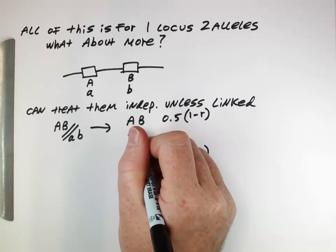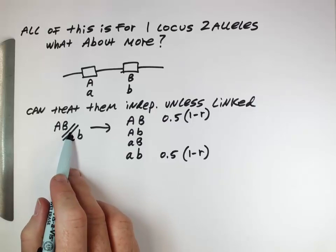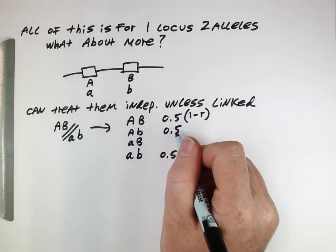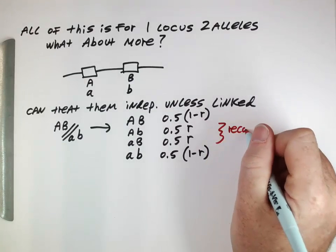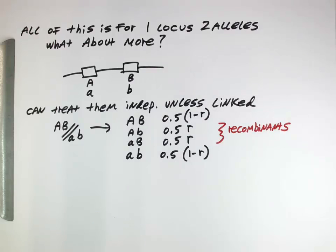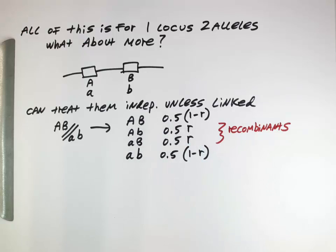Some of the gametes, if there's recombination, will have the recombined combinations. If there's a recombination event, capital A can be combined with lowercase b. These recombinants are equally likely but occur based on the recombination rate. If we have no linkage, we would expect this rate of recombination to be 0.5 — alleles that are very far from each other or on different chromosomes recombine randomly.